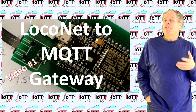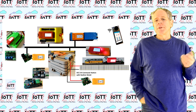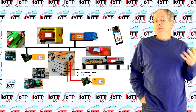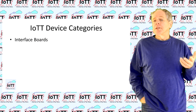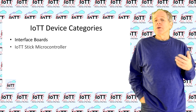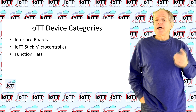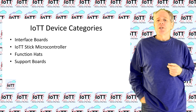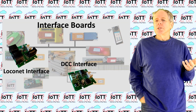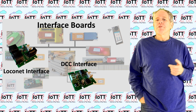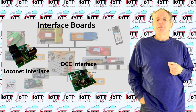What began about five years ago with a simple LocoNet interface and MQTT gateway has become a product family with four types of devices: interface boards, the IOTT stick microcontroller, several function heads, and some additional support boards. Interface boards are used to connect to the layout, and there are two different types: the DCC and the LocoNet interface board.